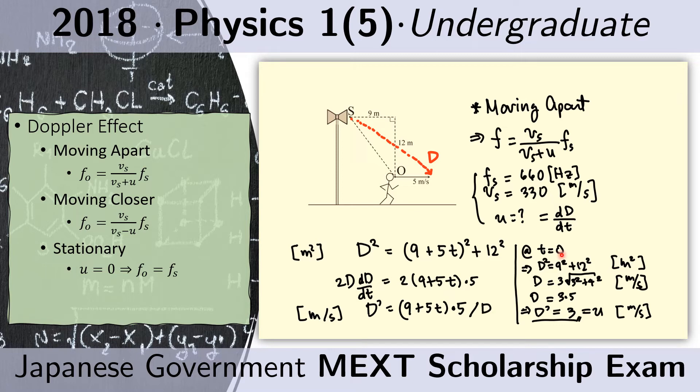At time t equals 0, this is when the observer is 9 meters away from the source in the horizontal distance. That hypotenuse is actually equal to this one where t is replaced with 0. If we replace t with 0, we get 9 squared plus 12 squared.